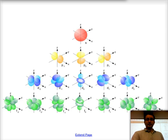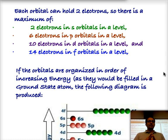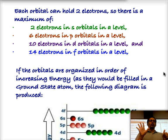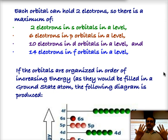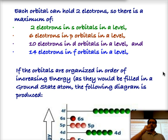Each one of those orbitals can hold a maximum of two electrons. So for S orbitals, a given energy level can hold a maximum of two electrons. Because there are three P orbitals per energy level, you can have a maximum of six electrons in P orbitals. There are five D orbitals, each holding two, giving a total of ten electrons in D orbitals. And because there are seven F orbitals per energy level, you can get a maximum of 14 electrons in F orbitals. Each particular orbital can only hold two electrons.